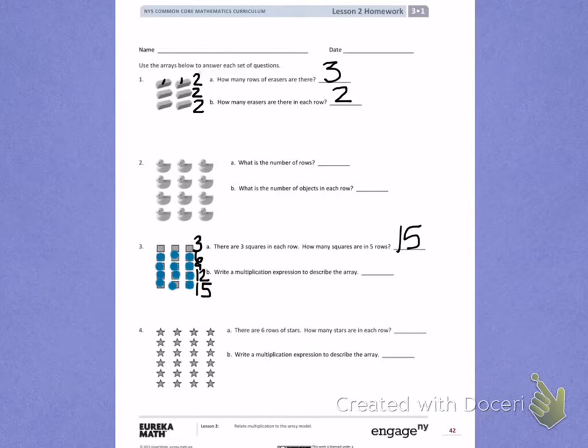Letter B: Write a multiplication expression to describe the array. As we learned in class today, I have to first write how many rows there are. In this picture, there are 5 rows.